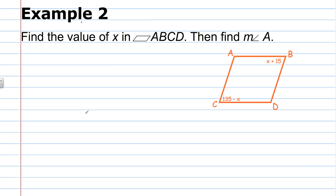Example 2: find the value of X in parallelogram ABCD, then find the measure of angle A. In this parallelogram, two opposite angles are labeled — angle B is labeled as X plus 15, and angle C is labeled as 135 minus X. Angle B and angle C are opposite angles, therefore they are congruent. So we write the equation: X plus 15 equals 135 minus X.